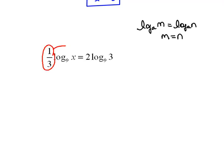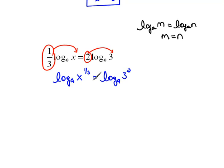If that's true, then factors can also be put back as powers. So let me rewrite it that way first. This would be log base 9 of x to the 1/3 power equals log base 9 of 3 squared. Now this rule does take effect because we have log base 9 equal to log base 9, so our arguments must equal each other. x to the 1/3 must equal 3 squared, which is 9.